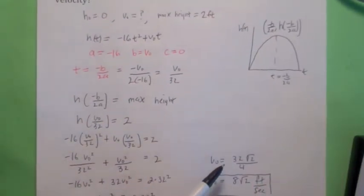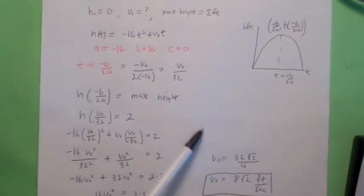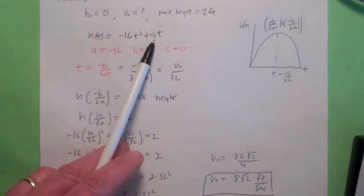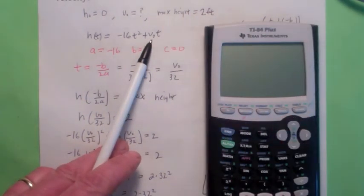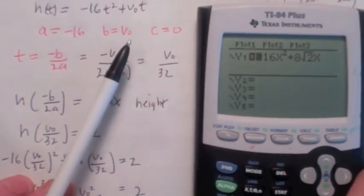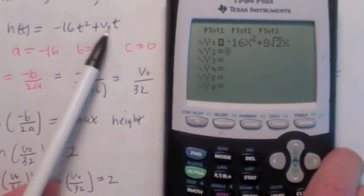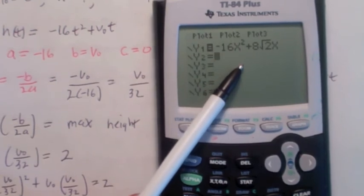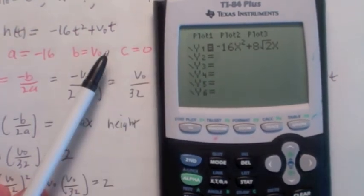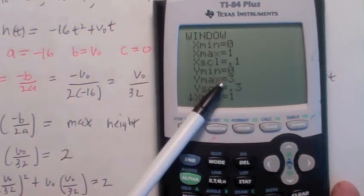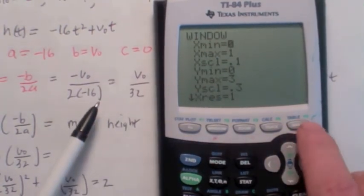Okay. We have another minute left. So let's see if we can use our graphing calculator to check our answer. So we got that v₀ is 8 square root of 2. And that makes the function h(t) equaling negative 16t squared plus 8 square root of 2 t. So let's see on the graphing calculator. If you enter the function h(t), or let's just enter y1 equal negative 16x squared plus 8 square root of 2 x. And let's use the window 0 to 1 on x and 0 to 3 on y.